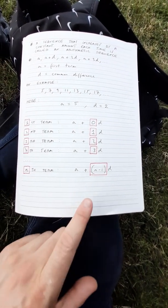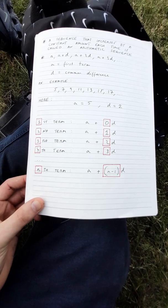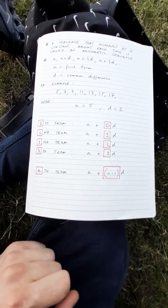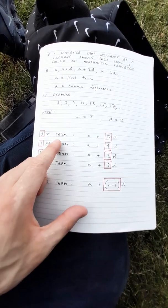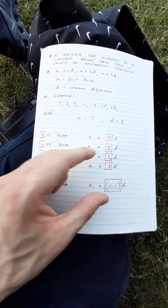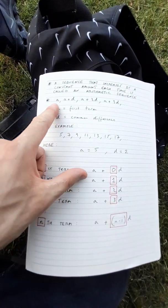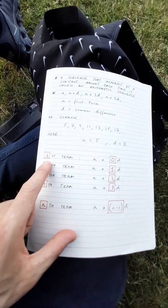Now why do we use a plus n minus 1d to describe the nth term of an arithmetic sequence? That is because the first term is a plus 0d which is simply a. 0 is 1 less than 1.